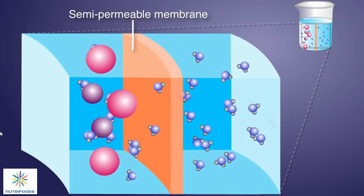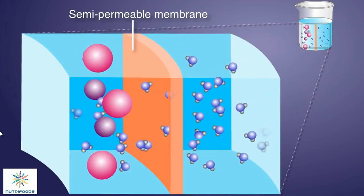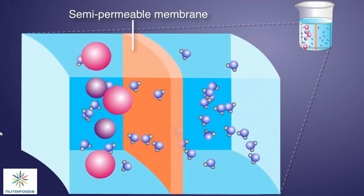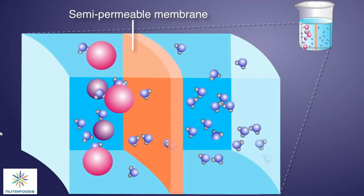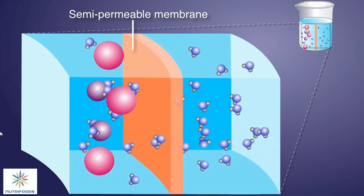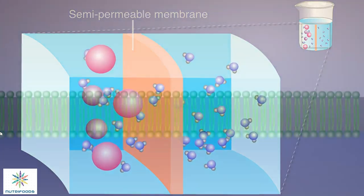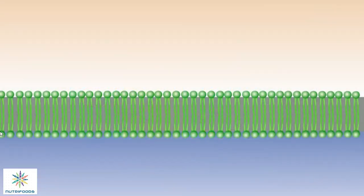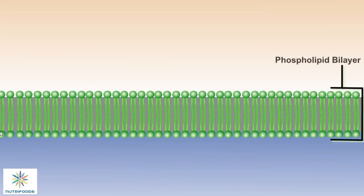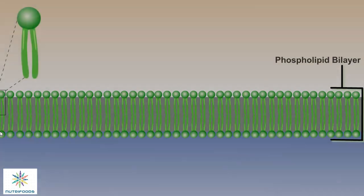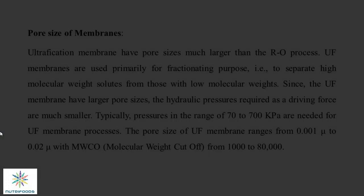Ultrafiltration membranes have a pore size much larger than the RO process. They are used primarily for fractionating purposes, i.e., to separate high molecular weight solutes from those with low molecular weight.